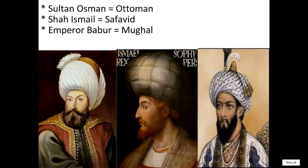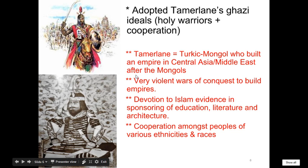The Ottomans, the Safavids, and the Mughals are all going to have Turks. The three founders — Osman, Ismail, and Babur — they're all going to have the same title of emperor, sultan or shah, which is the same thing. They're all going to have the same background and they're going to wear the same-looking headdress.